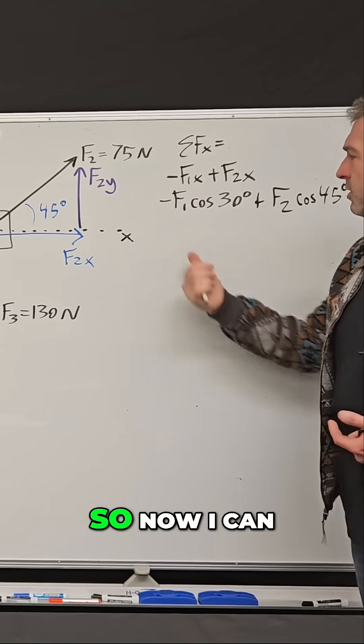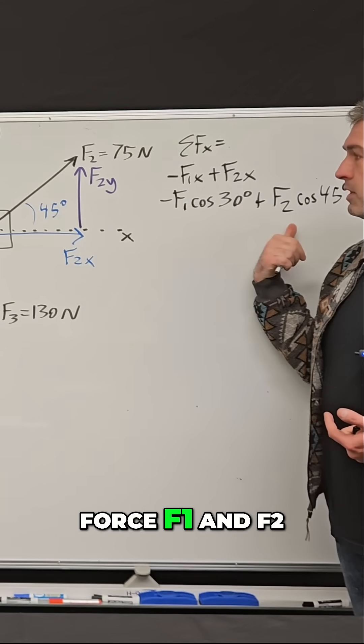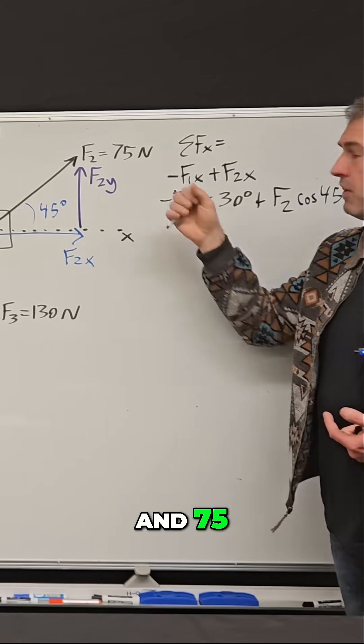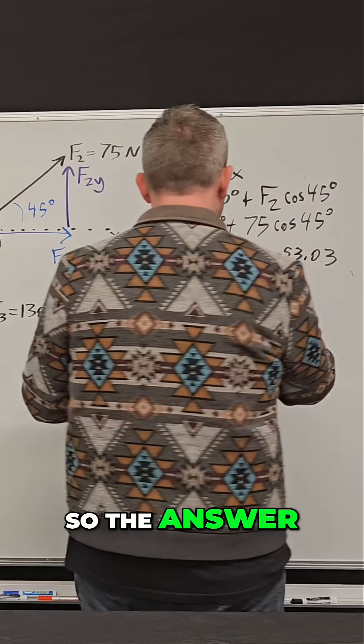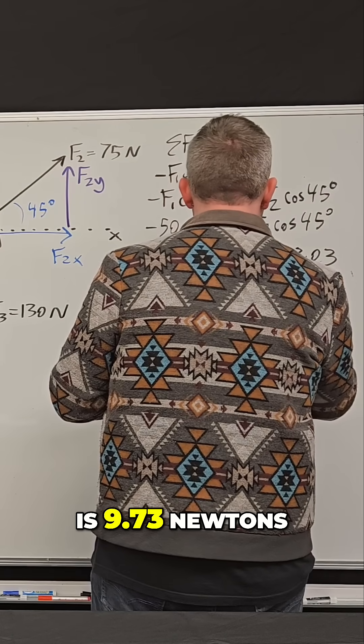Now I can put some numbers here because I already know force f1 and f2, that's 50 newtons and 75, and if I add these two terms I'll have my total force in the x direction. The answer is 9.73 newtons.